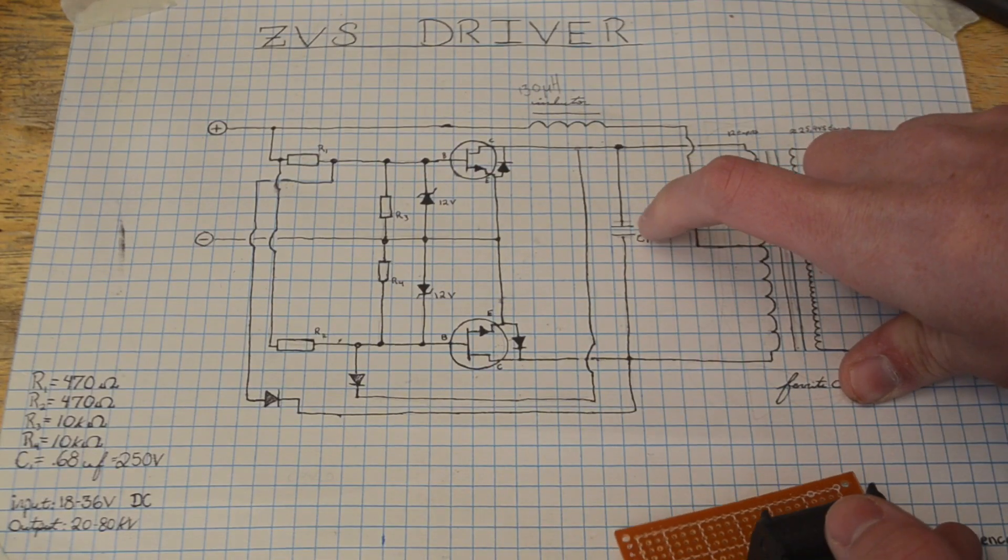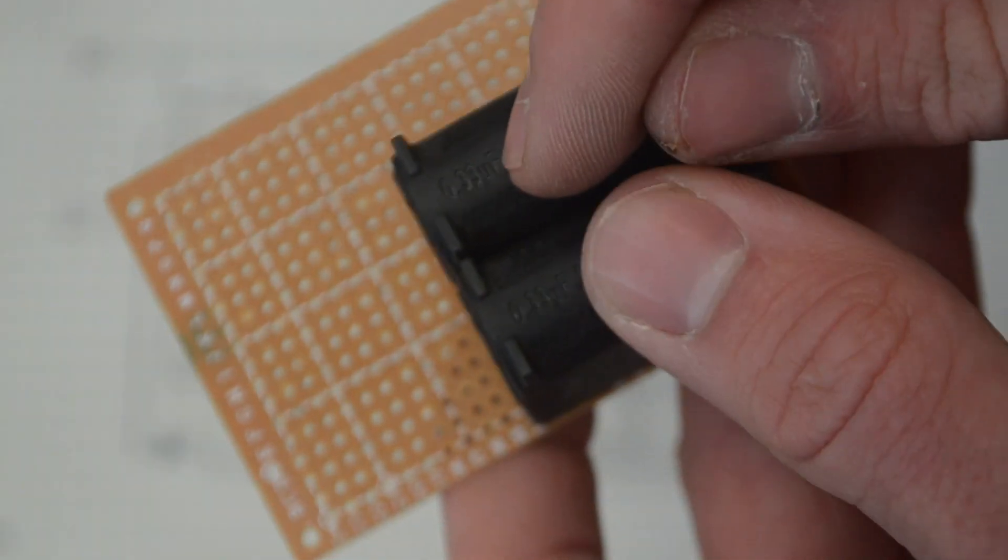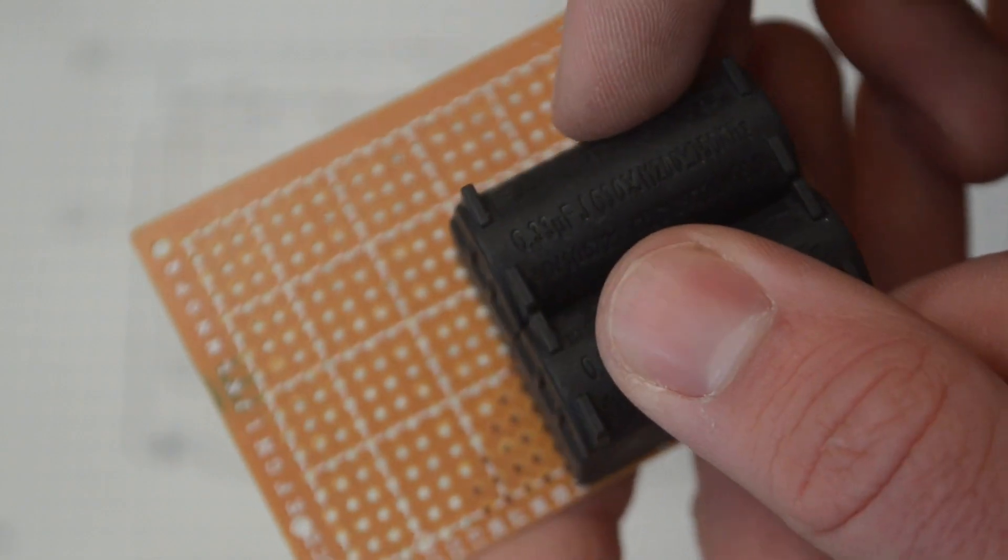This capacitor here is supposed to have a capacitance of around 0.6 microfarads. So for that, I'm going to connect these two capacitors here, each rated at around 0.33 microfarads. So connected in parallel, that should give me around 0.66 microfarads.